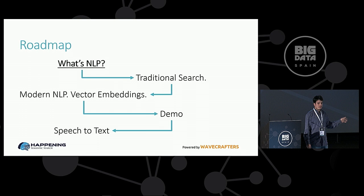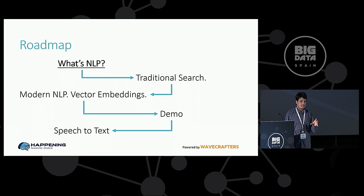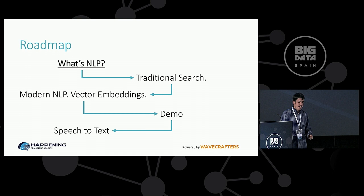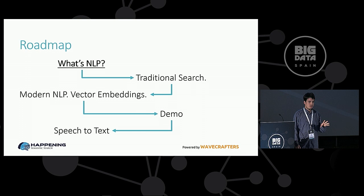This is the roadmap we are going to follow. First, we are going to talk a little bit about what we understand NLP is, and we are going to see some use cases. Then we are going to analyze one of those use cases, in particular searching in a database and how it has been traditionally done. We are going to look at the problems it has, and then talk about the solution, which is modern NLP, and in particular vector embeddings, which is the method we are currently using. We will explain what they are and how they work, make our case for the need of GPUs, and then do a practical example using a demo of Web Script News.